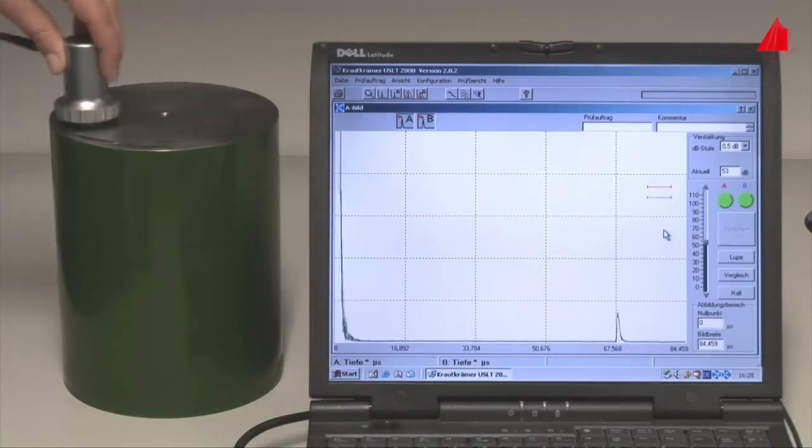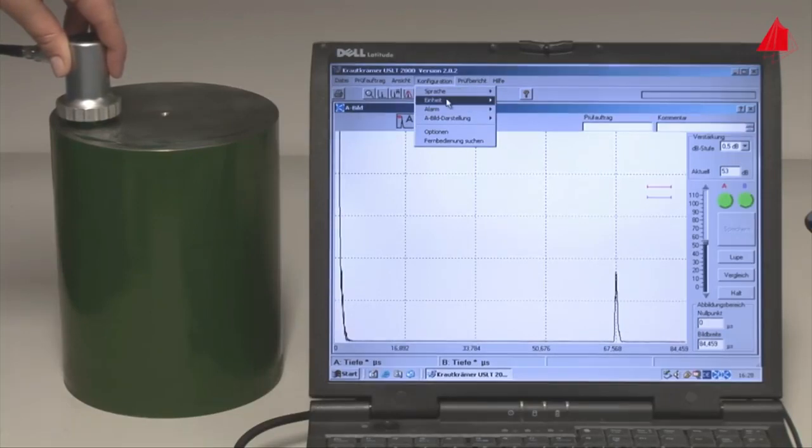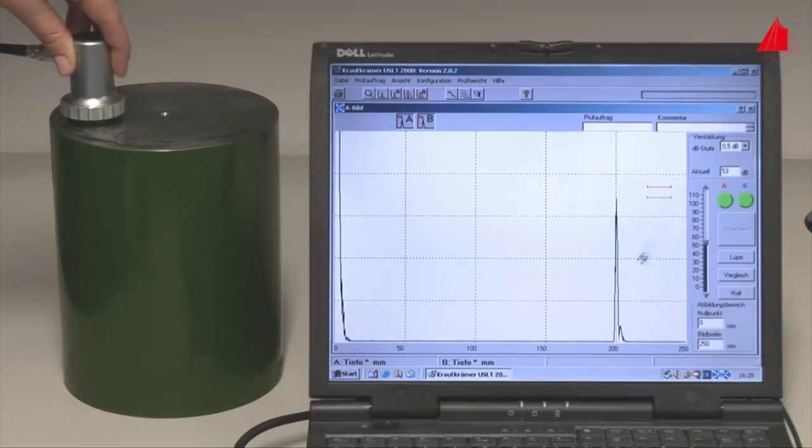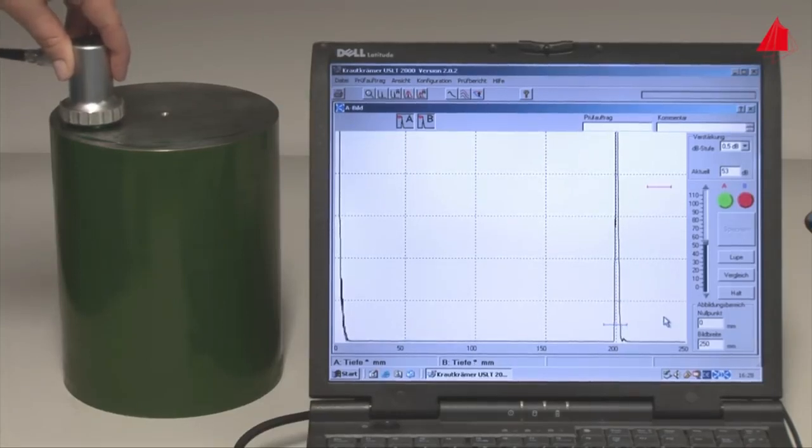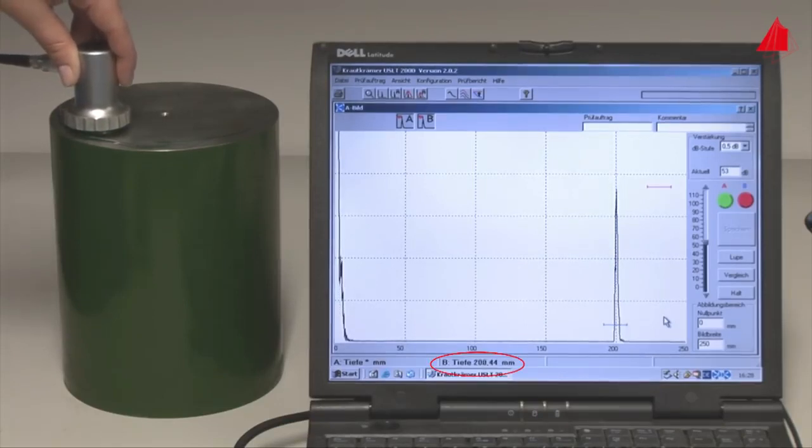Using the velocity of sound in the material, one can plot the calculated depth on the monitor to the right instead of time—a very useful feature. With the help of so-called trigger gates, which may be set on the echoes with the computer mouse, the depth of the defects can easily be read off at the lower left hand corner of the monitor. The cylinder back wall lies in a depth of about 200 millimeters below the probe, so the cylinder has a height of 200 millimeters.